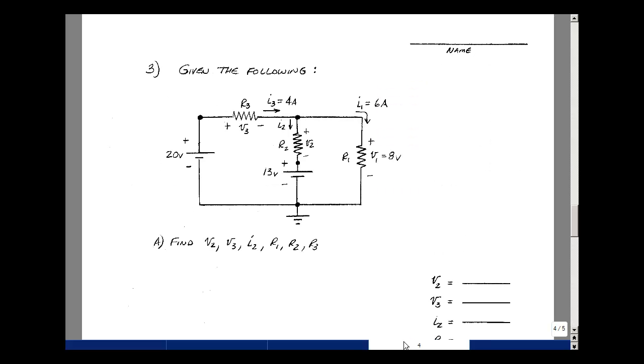For problem number three, can you find the voltage V2, V3, the current I2, which is here, and the resistance is R1, R2, and R3?